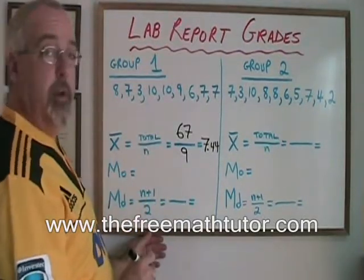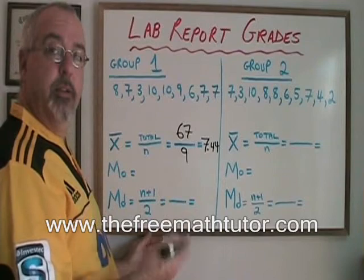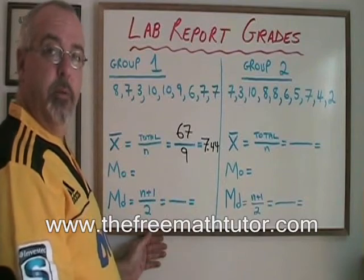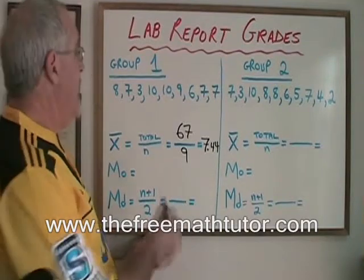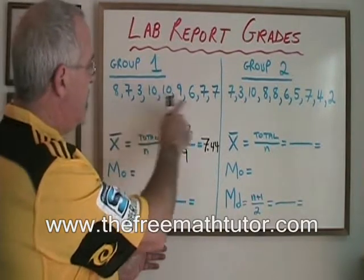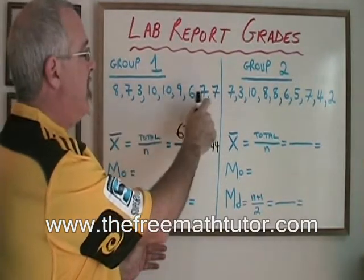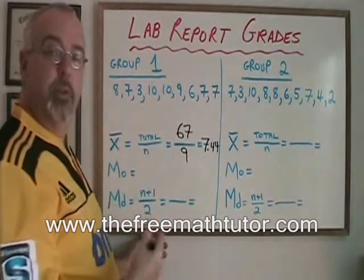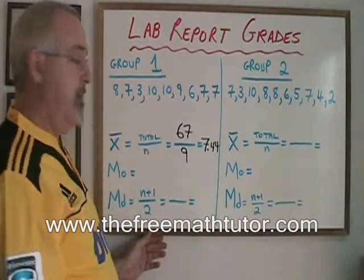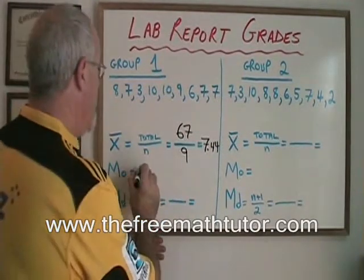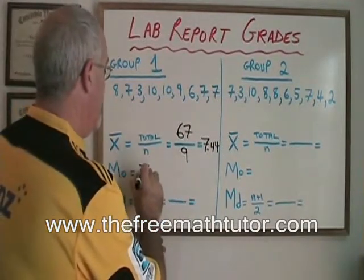The mode of Group 1 is the value that occurs the most often. If we look at this data, we can see that the value 7 appears three times, which is more than any other number. So the mode is 7.